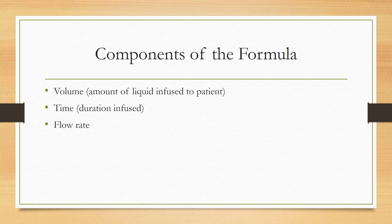There are three components of the flow rate formula. The first is volume, and this is the amount of fluid that's actually infused into the patient. It's the amount of fluid, not the amount of medication. The next one is time, and that's how long it's being infused into the patient. And those two are used to get your final flow rate.